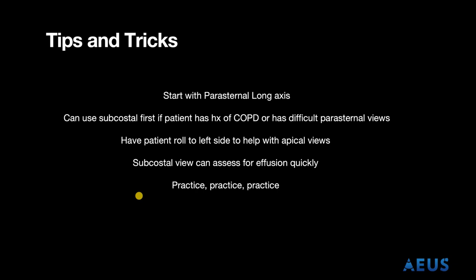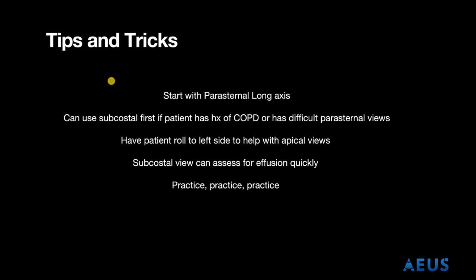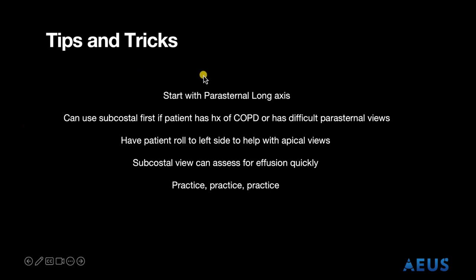Some tips and tricks when doing bedside echo in the emergency room: always start with the parasternal long axis view, as it helps orient you on the axis of the heart and allows you to obtain a baseline while getting other images. If the patient has difficult parasternal windows or has history of COPD with inflated lungs, you can reach towards a subcostal view first. Patient positioning is key — having the patient in left lateral decubitus can help with challenging apical views. Getting hands-on practice is always the most important thing to build comfort with echo in the emergency room.